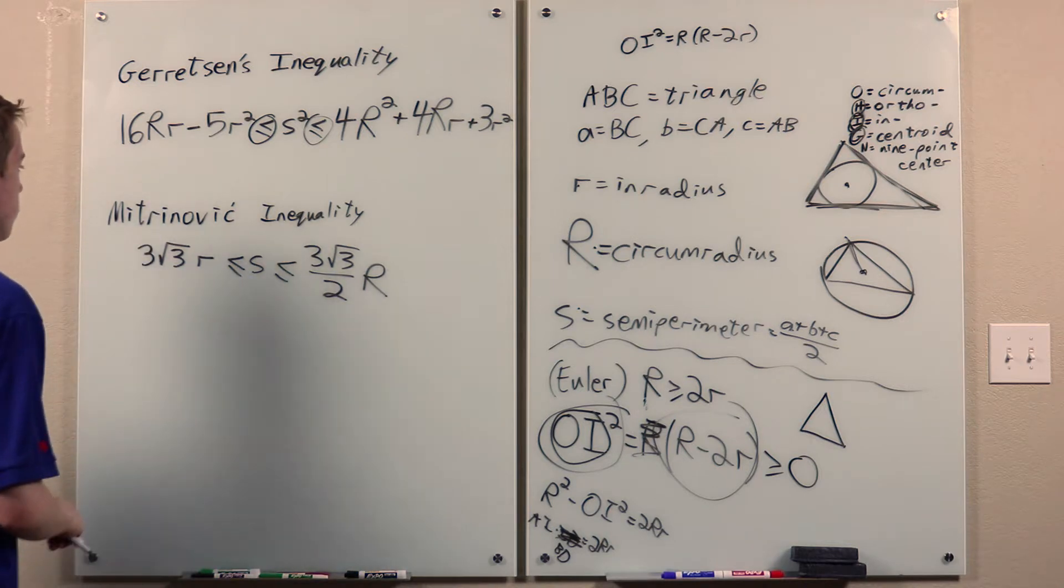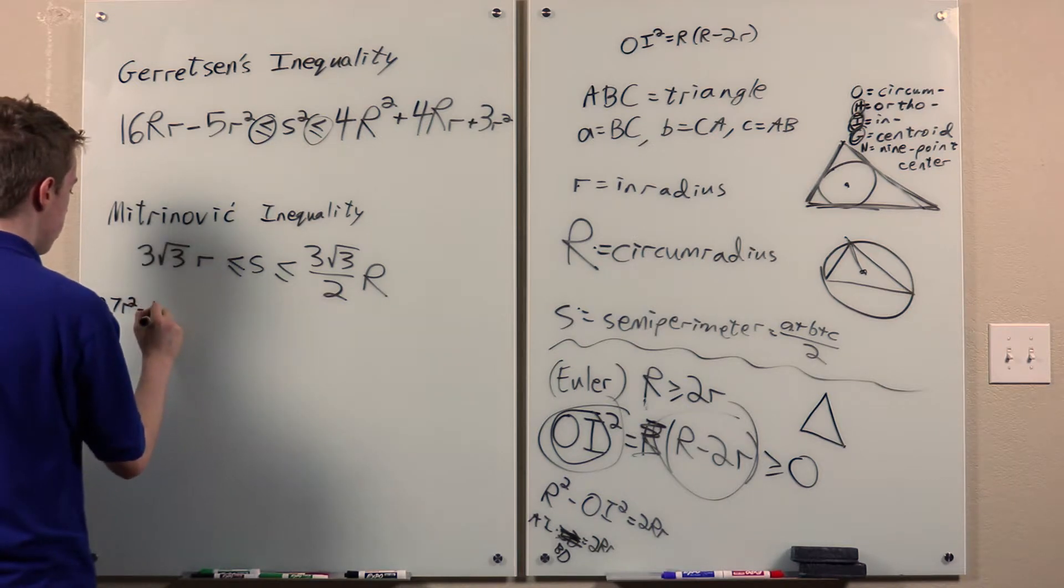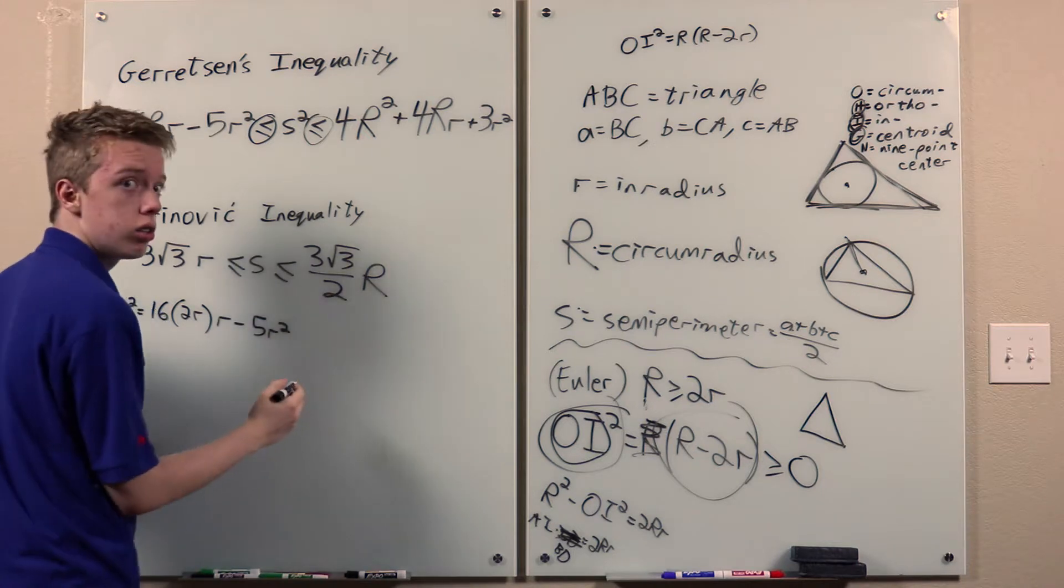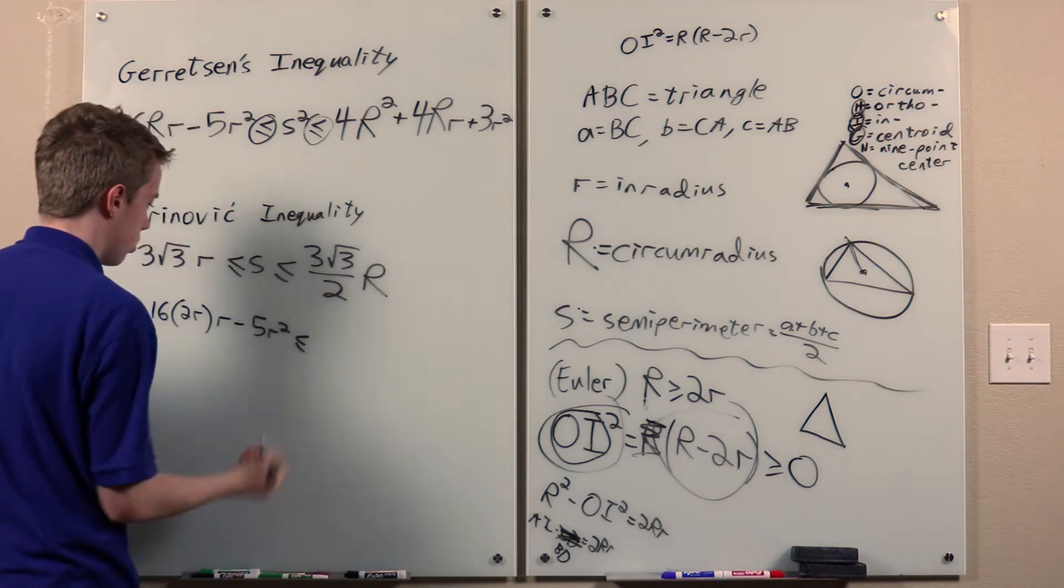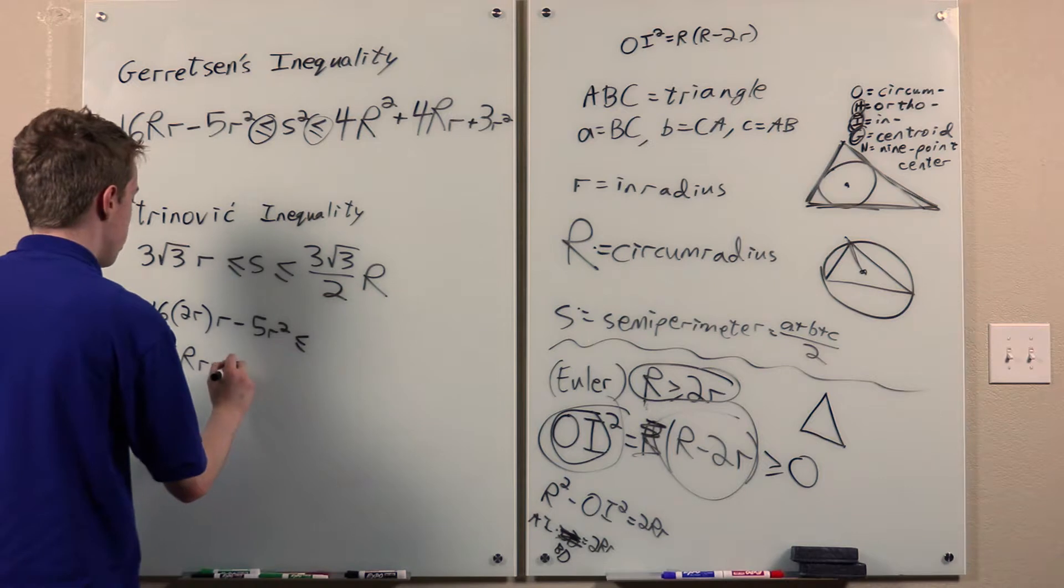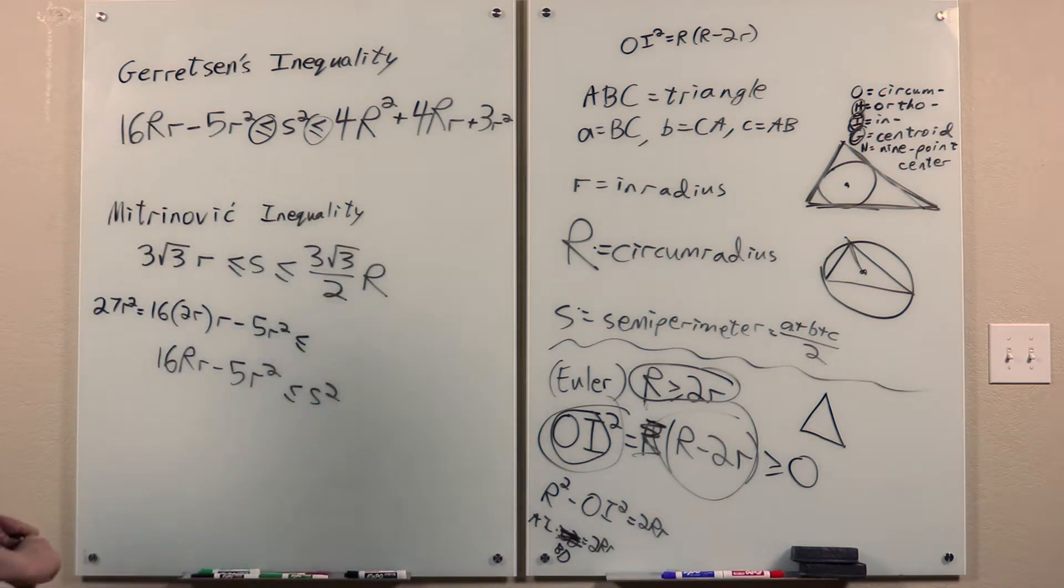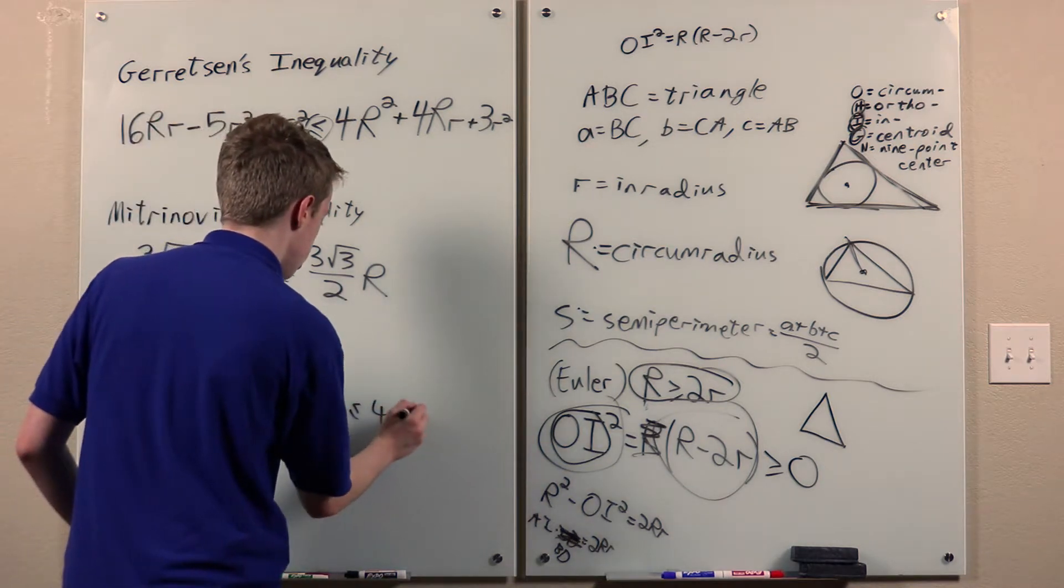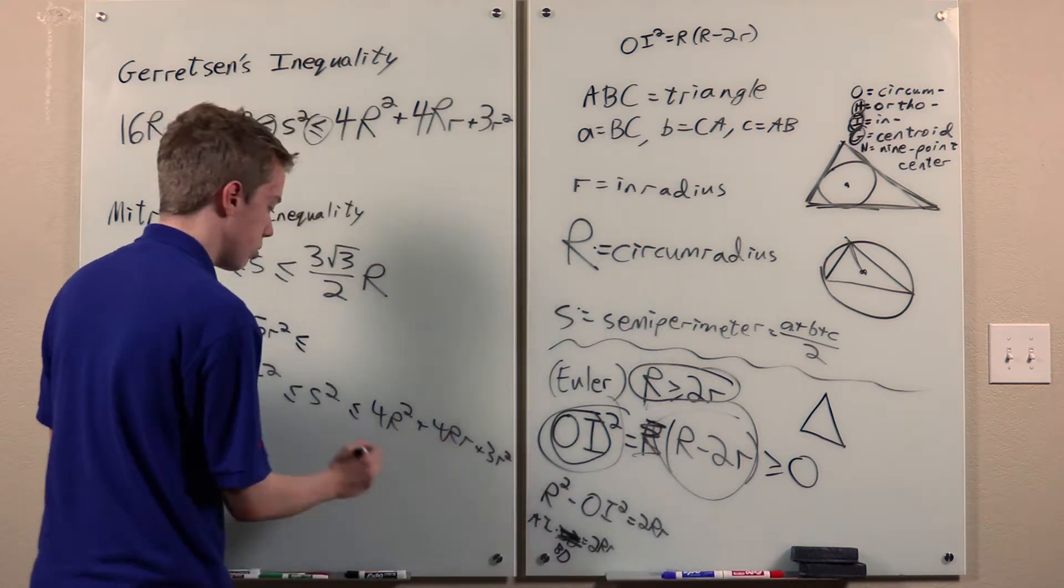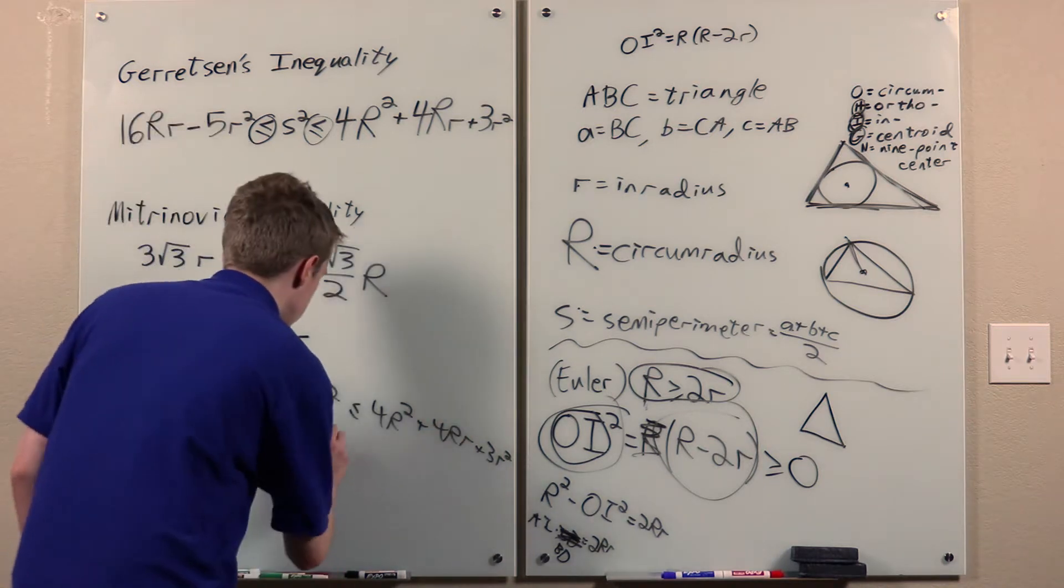And this immediately gives us Mitrinovich's inequality. How? Well, we know that 27r squared equals 16 times 2r times r minus 5r squared. And by Euler's inequality, this is less than this, less than or equal to this, which we know is less than or equal to S squared. And furthermore, we have the S squared. So less than or equal to this. And then replacing the r's with... replacing the little r's with big R over 2's, we have this.